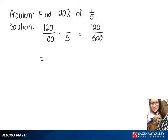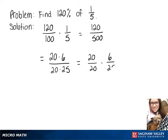Now we can factor top and bottom. I'll rewrite the top as 20 times 6 and the bottom as 20 times 25. Now we can split that up into 20 over 20 times 6 over 25. 20 over 20 goes away, leaving us with our answer 6 over 25.